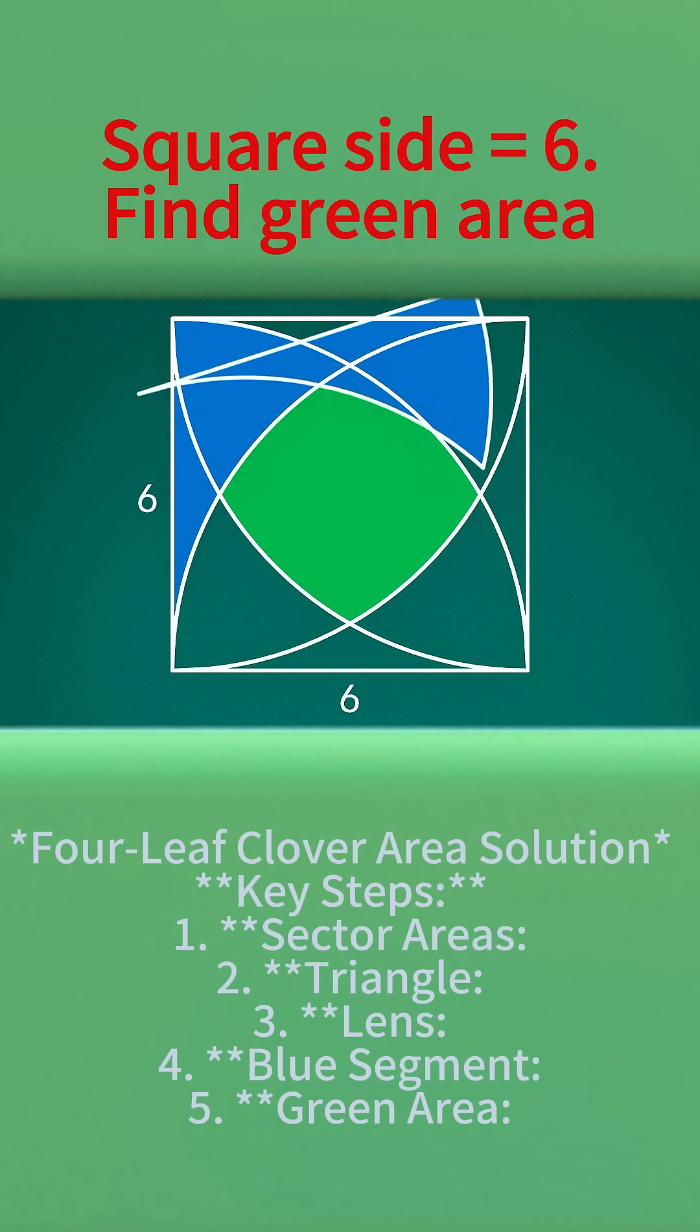Look at the blue part carefully. The white part is made up of 4 blue parts, so we only need to find the area of one blue part. Then the area of the green part will come out.